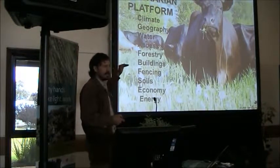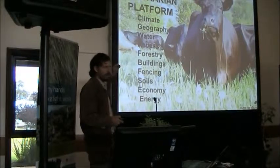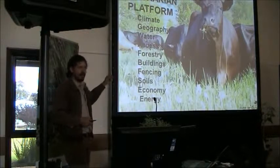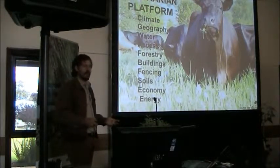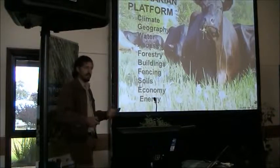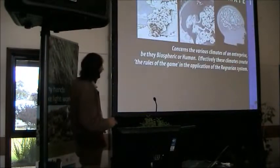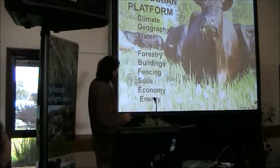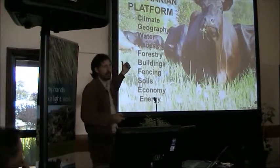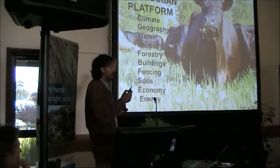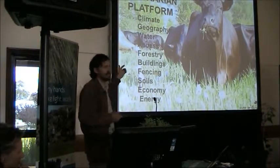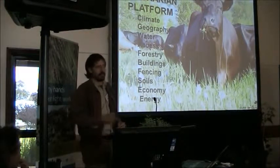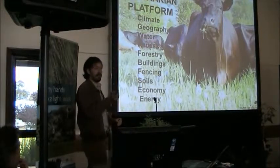Geography is the next most permanent aspect of agriculture. We do have big yellow machines and diesel — we can go in and do earthworks and move things around, but it's relatively very expensive and hard to do. Further down: water, access — which means roads, paths, any kind of access — and forestry, which is anything to do with a tree on a farm: timber, fruit production, windbreaks, riparian buffers, carbon farming.